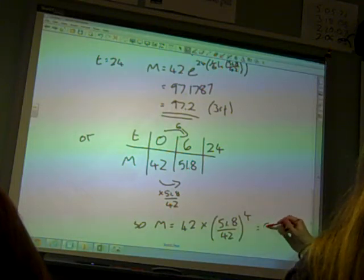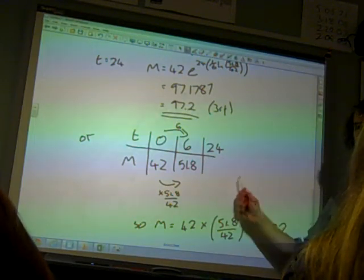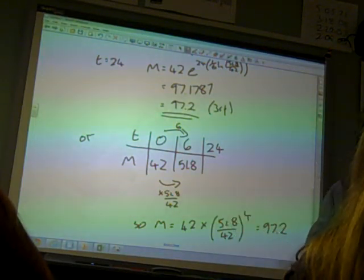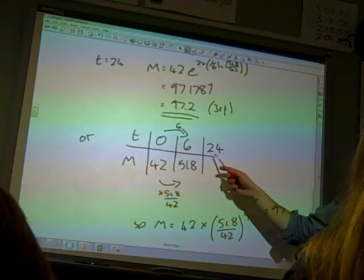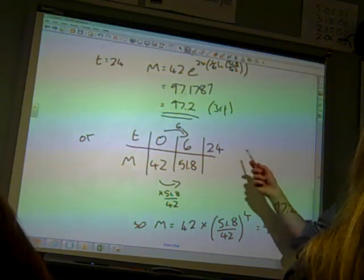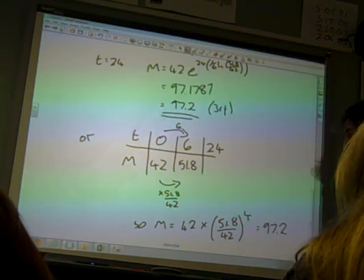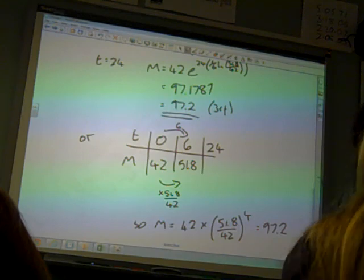Does that make sense? You could have extended your table and done it along the way. So you could have written what your answer was when t was 12 and then 18 and then 24. And you might have done it that way by just doing it one multiply at a time. But that's the other method.